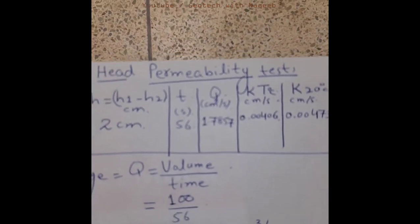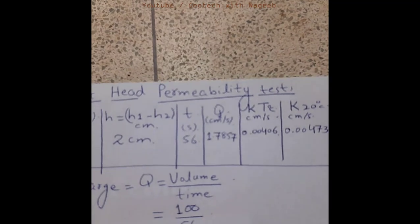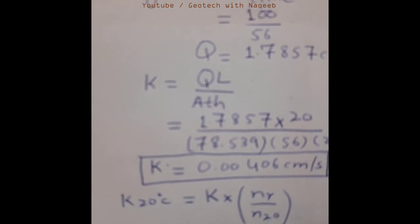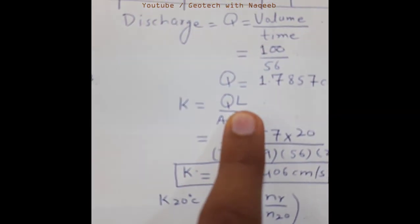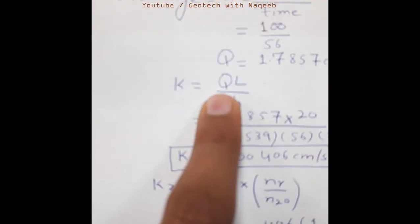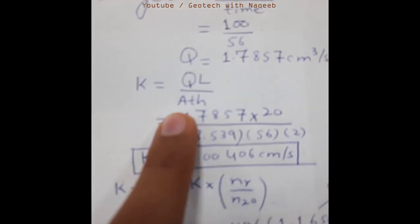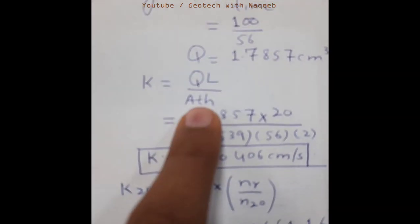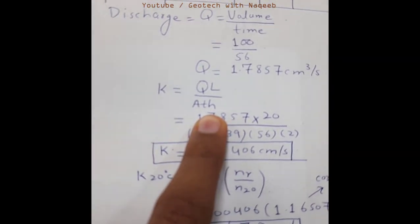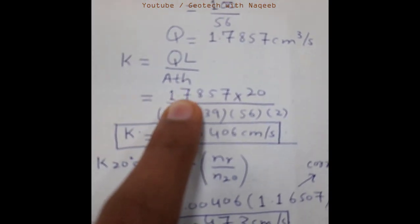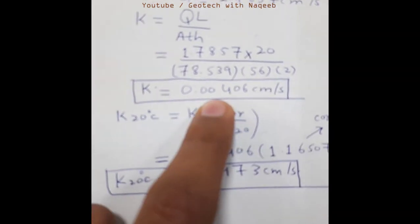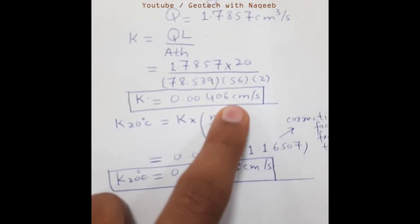The formula for k is: k = (Q × L) / (A × t × h), where L is the length of the soil sample = 20 cm, Q = 1.7857 cm³/s, A is the area calculated from π r², and h is the head difference = 2 cm. Substituting all values, the k value at 14°C comes out to be 0.00406 cm/s.